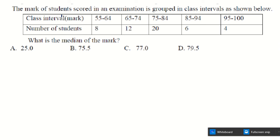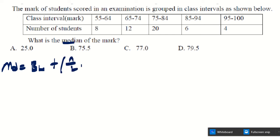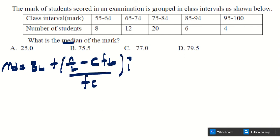Next question: scores in an examination are grouped in class intervals. Find the median using the formula: Median = L + [(n/2 − F) / f] × h, where L is the lower class boundary of the median class, F is the cumulative frequency before that class, f is the class frequency, and h is the class width.